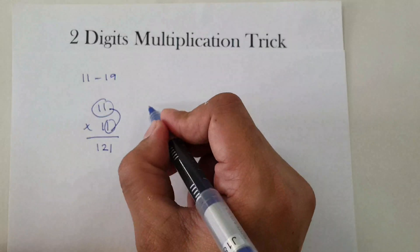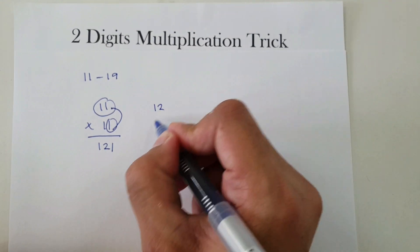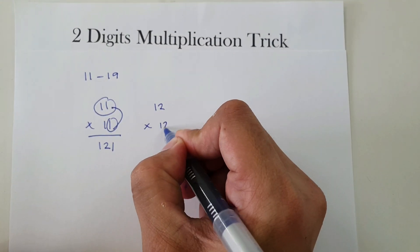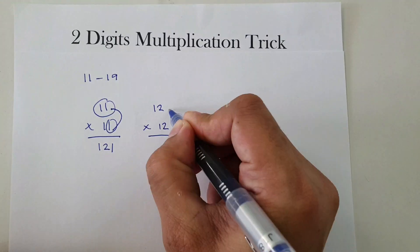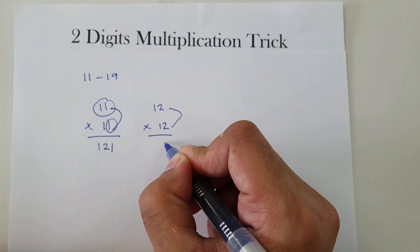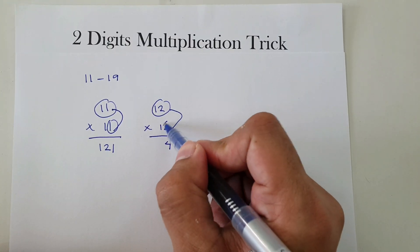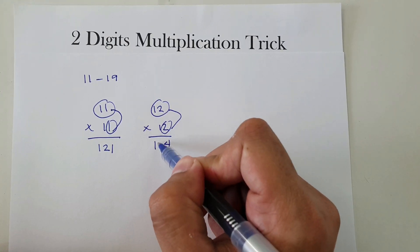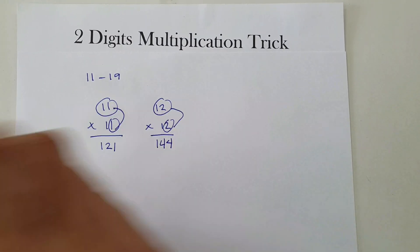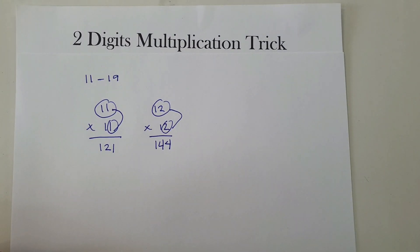Next, let's have 12 times 12. The ones digit: 2 times 2 is 4. Then 12 plus 2 is 14. So 12 multiplied by 12 is 144.